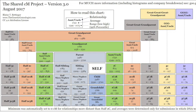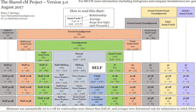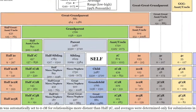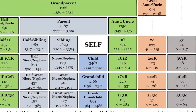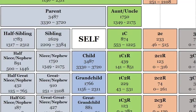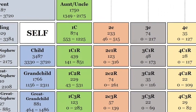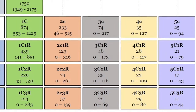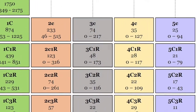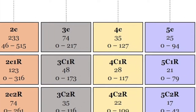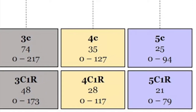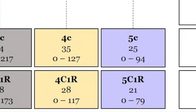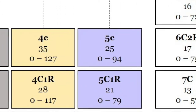So as an example, let's look at some numbers. We're going to take a quick look at the shared centimorgan project chart, which shows the average amount of centimorgans shared with certain relationship distances, as well as a range of shared DNA within those certain relationship distances. As you go further out in distance of relation, those numbers get smaller and smaller. By the time you get to a fourth cousin, you're averaging 35 centimorgans, with a range from nothing to 127 centimorgans. For fifth cousins, you're looking at an average of 25 centimorgans with a range of possibly nothing to 94 centimorgans.